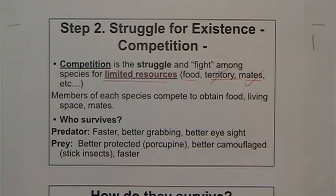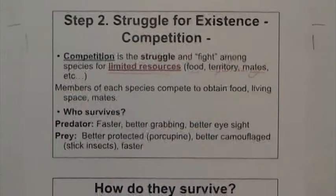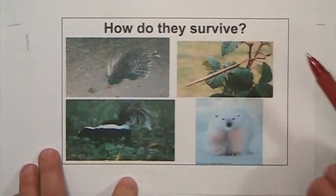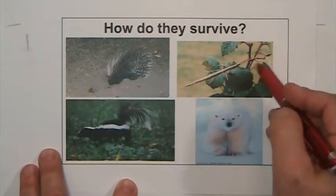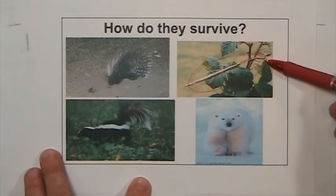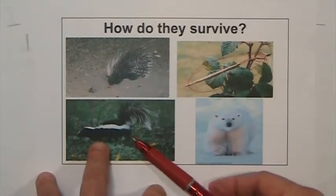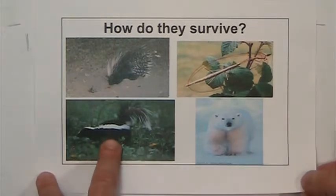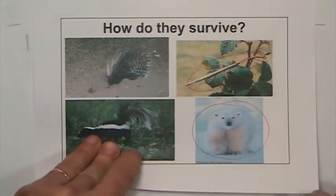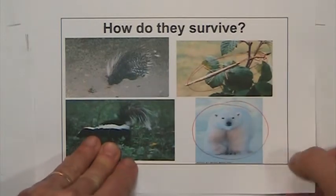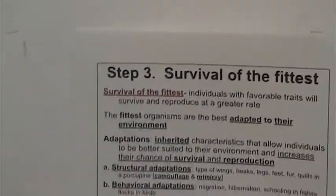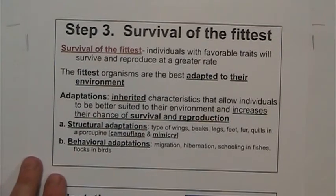Who's going to survive? The one that has the better traits at a particular time. How do they survive? The porcupine has great defenses — those quills. The stick insect looks just like a stick, so birds don't really see it. The skunk survives because it sprays that stinky smell and marks its territory as a warning: don't come my way. And of course, the polar bear survives because of the layer of fat and the special fur that insulates it against cold weather. All those things are adaptations — characteristics that allow them to survive and make them better.